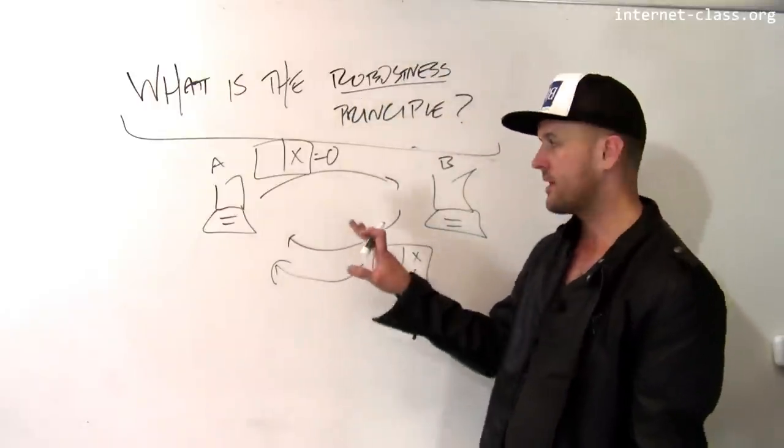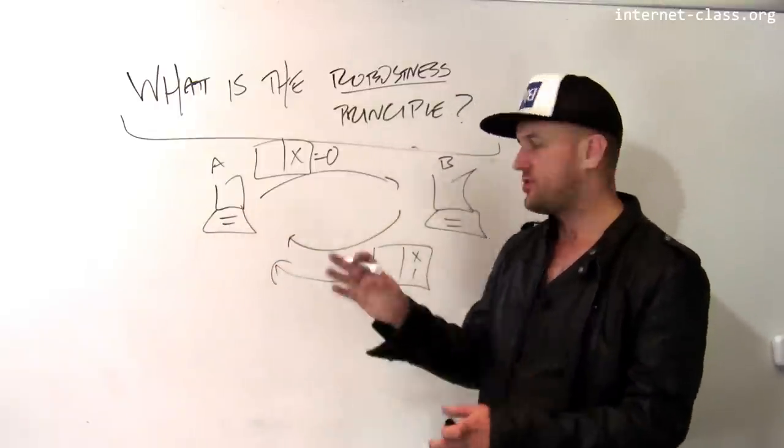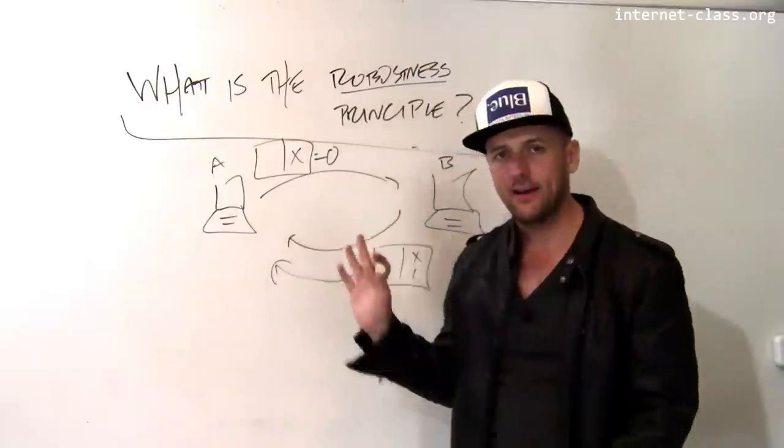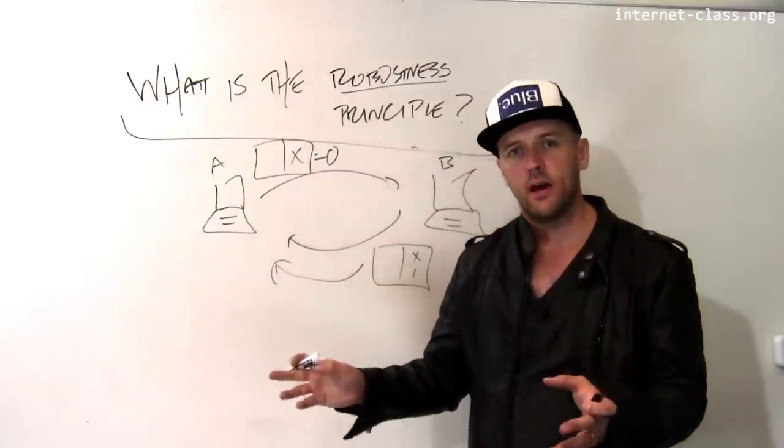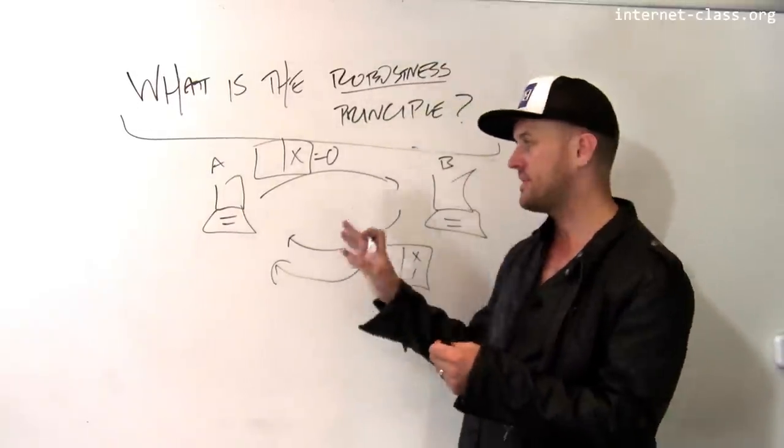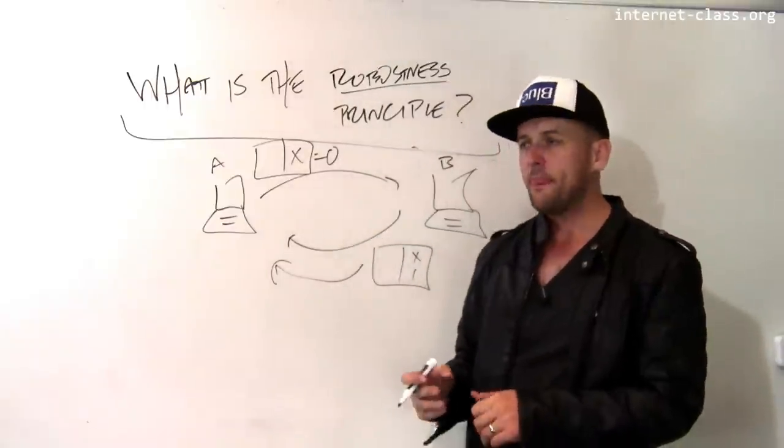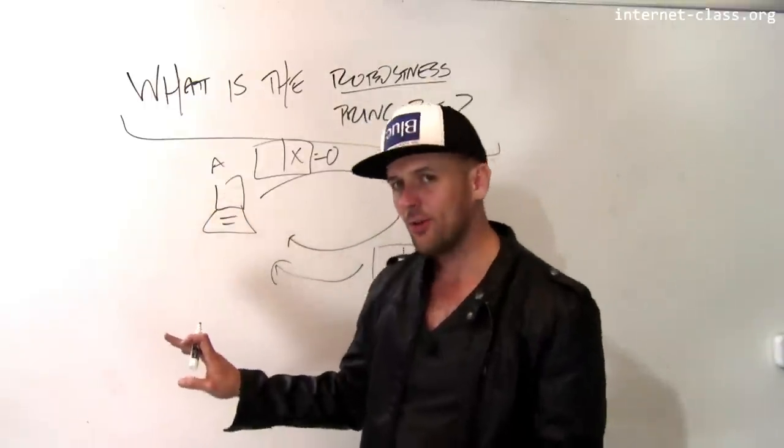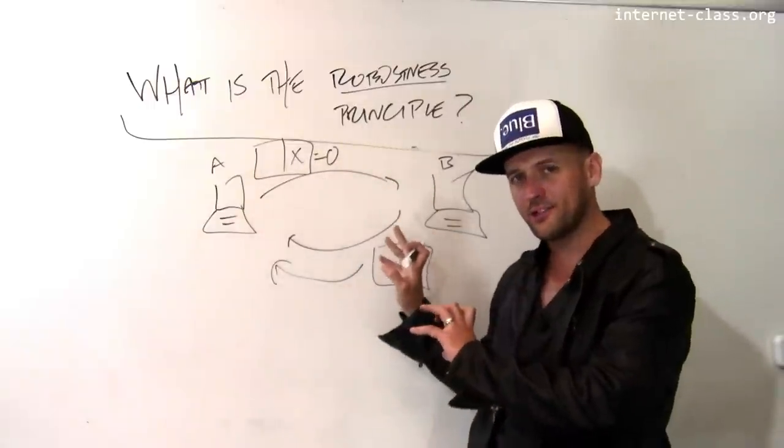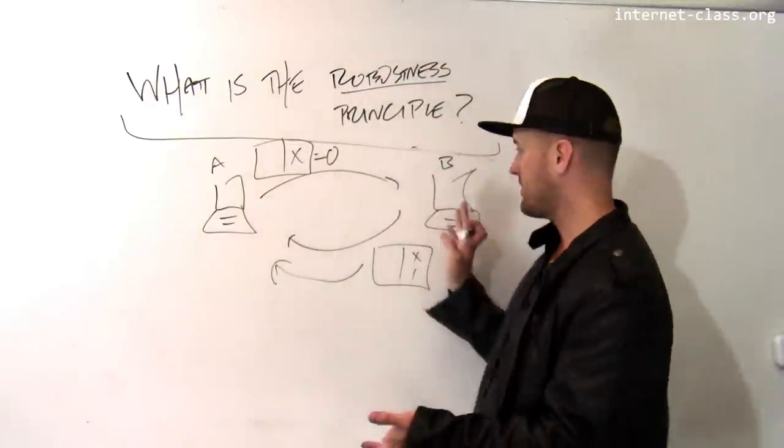So here is an example of a case where the protocol implementation on A shouldn't reject this packet because B did something a little bit weird. The protocol implementation should try to do the right thing whenever possible. The protocol implementation should be as flexible and as accommodating as possible. So if A can tell what B is trying to accomplish, A should try to participate and help B accomplish what it wants. Same thing with B.